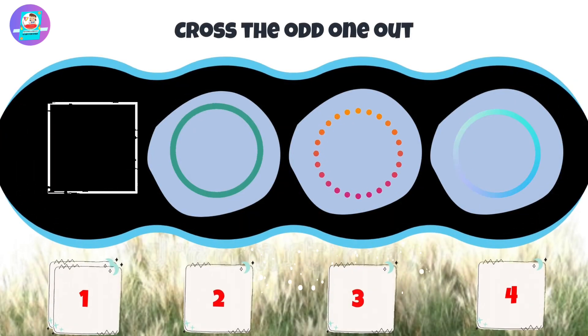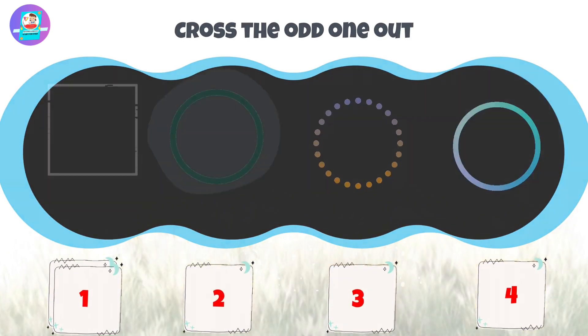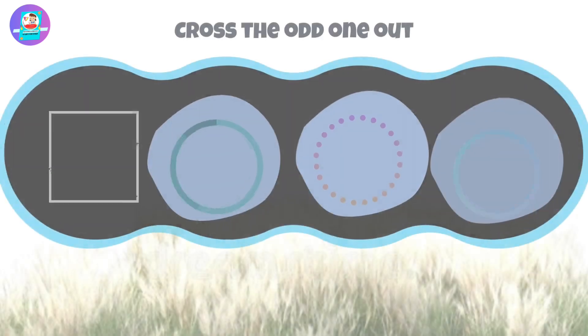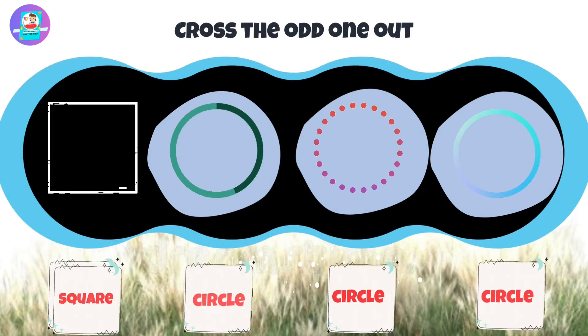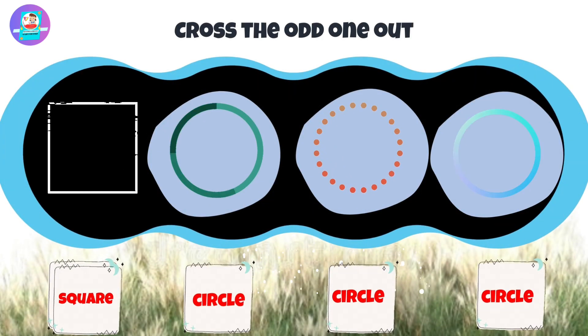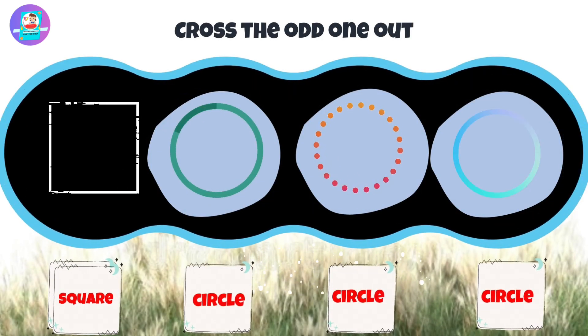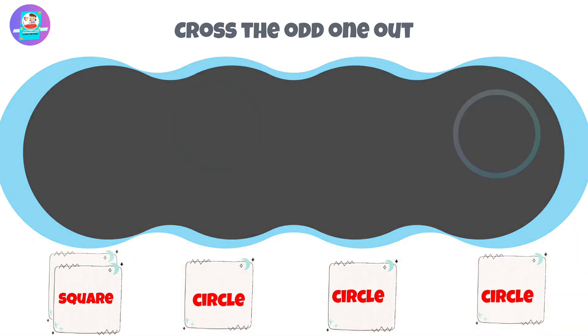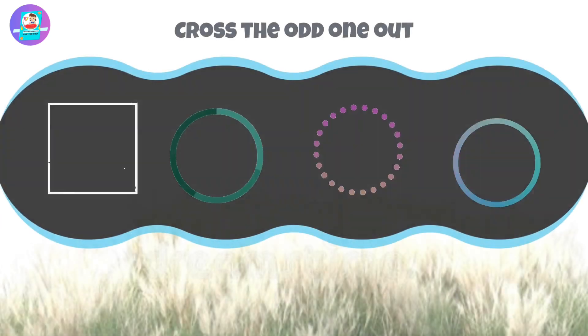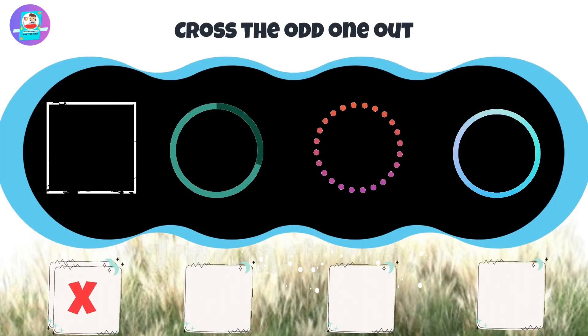Okay, let's check first. When we see here we have 3 circles and 1 square that is odd. So put a cross on this square.